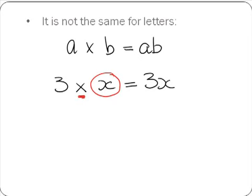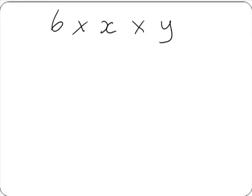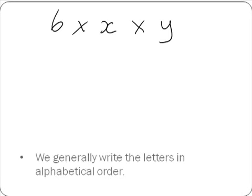So we will try a few more examples. Here we have 6 multiplied by x multiplied by y. In this instance we have a number and two letters. We generally write the letters in alphabetical order. So when we multiply this out, we are going to get 6xy. We drop the multiplication signs and write our numbers and letters together.